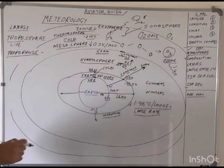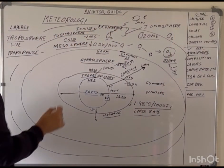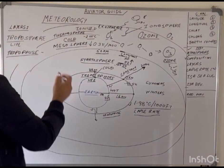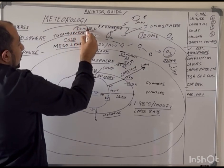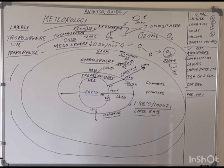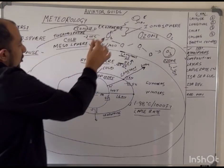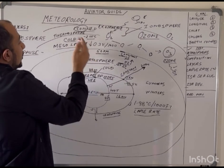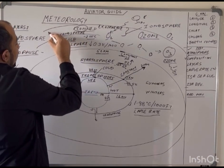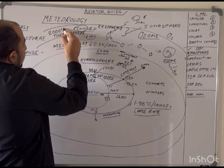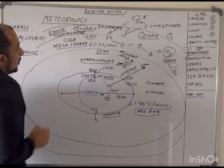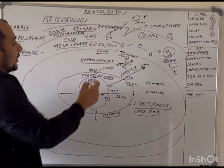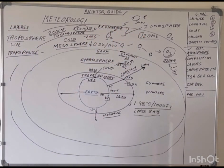The first part outside the mesosphere is called the thermosphere, and the other part is called the exosphere. Together, these are referred to as the ionosphere. The solar radiation breaks down all gaseous molecules at that height, forming ions or charged particles. Because of this breakdown and intense solar radiation, the temperature in the thermosphere can go up to 2000 degrees Celsius. The upper boundary of the exosphere is not clearly defined.